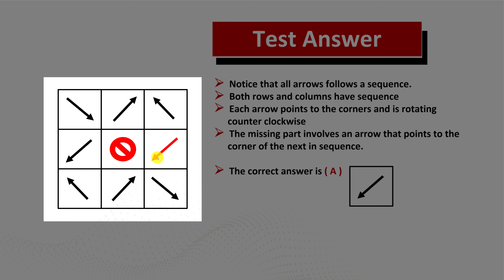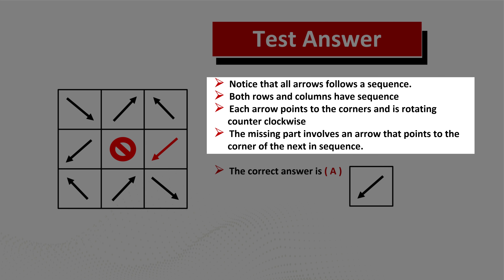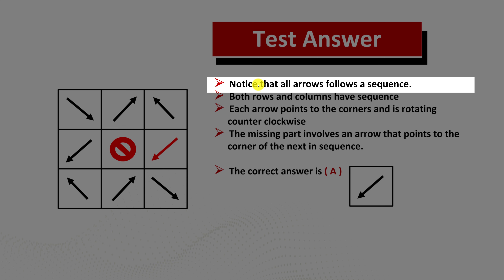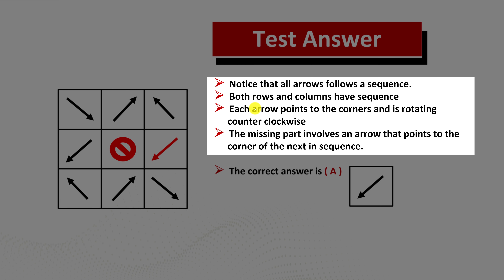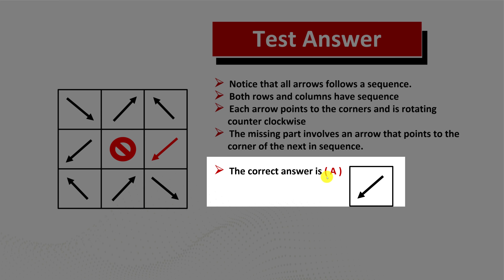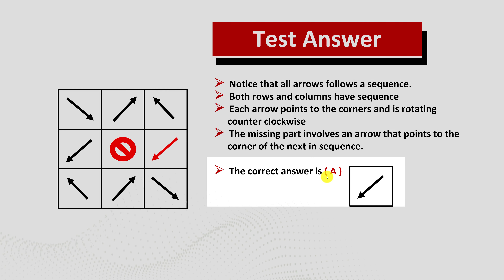So the sequence for the missing part has to be re-established from the right column. We have an arrow in the upper-right box pointing to the upper-left corner. The next one would be pointing to the bottom-left corner, and then the following one pointing to the bottom-right corner — this arrow in its sequence also moves counterclockwise. The correct choice here is choice A, arrow pointing in the bottom-left corner. Hopefully you've nailed this question.